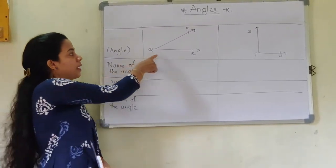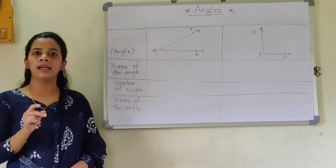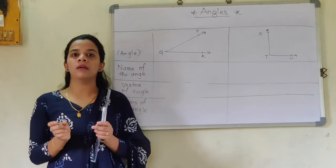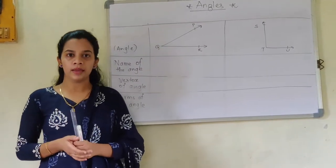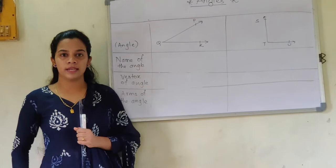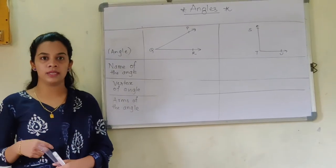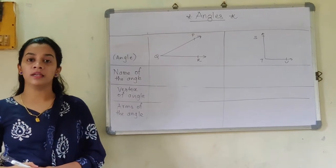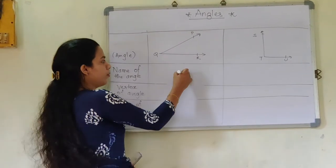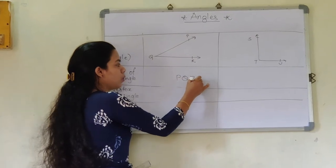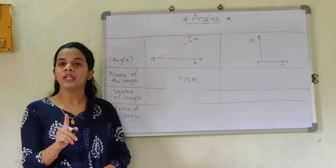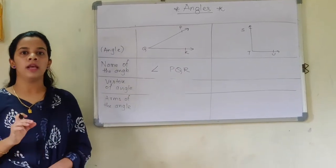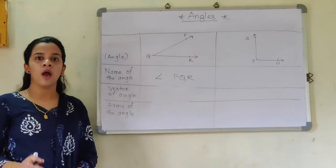Can you tell me what you can see over here? The angle is having a certain name — just as we have names for ourselves, this angle also has its own name. Here it is PQR. So how are we going to write it? We are not supposed to write only PQR; we are supposed to use a small notation to denote an angle. It is called angle PQR.